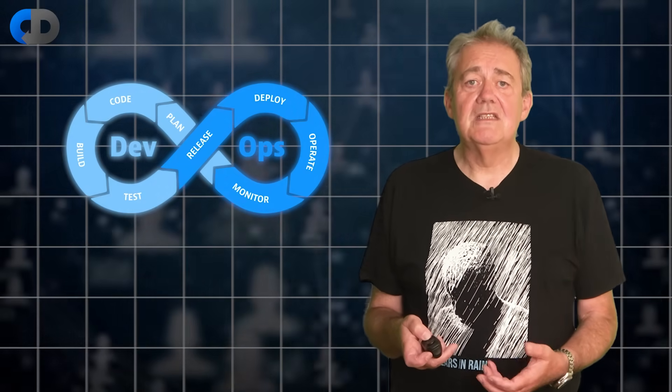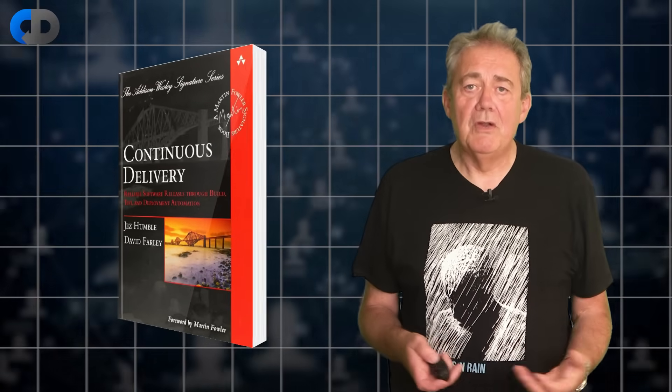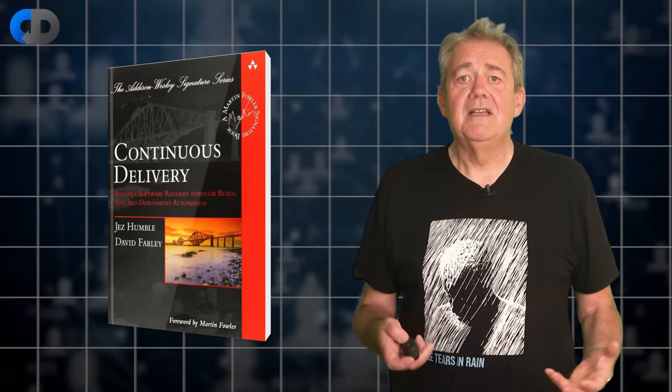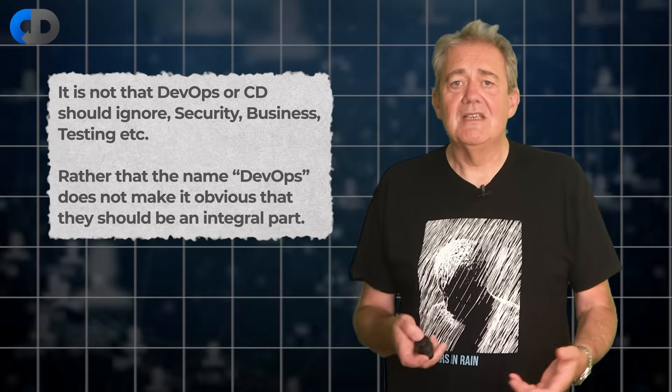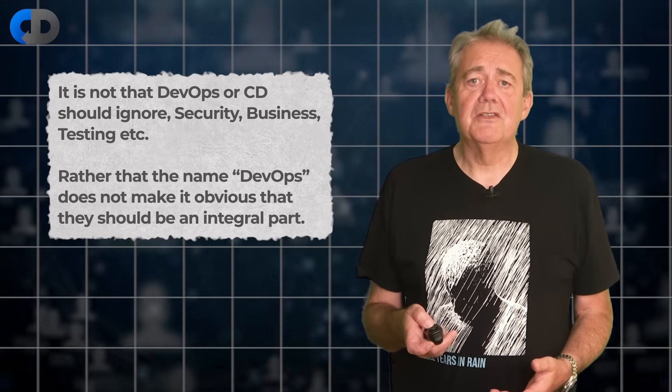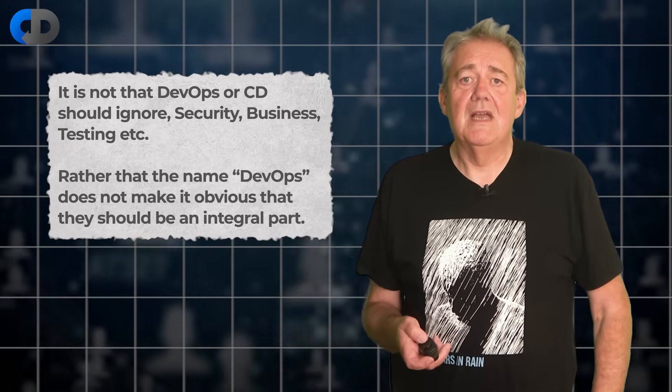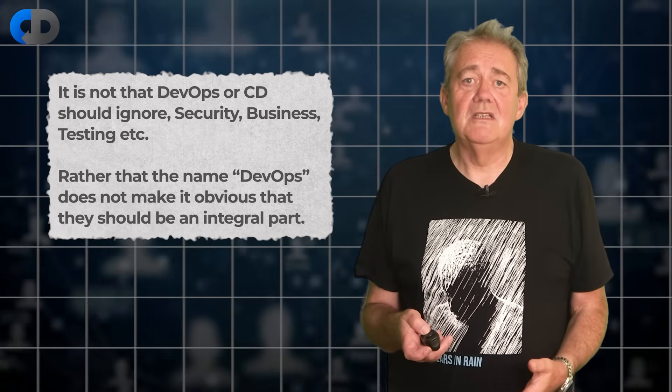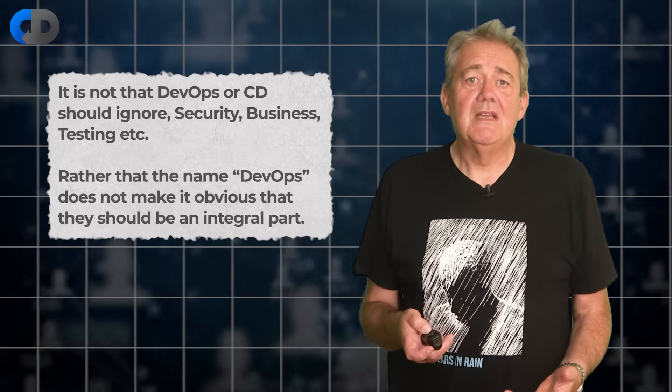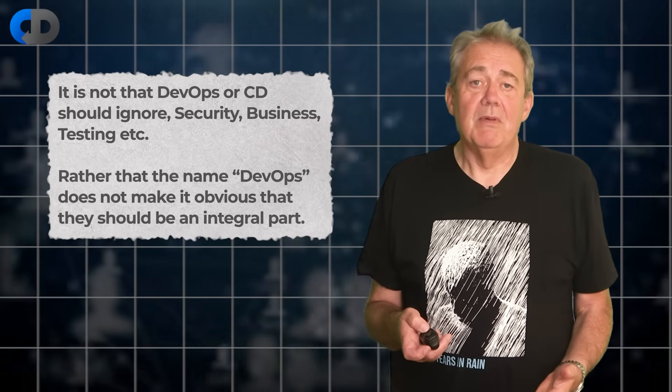DevOps is a broad discipline. When Jez Humble and I wrote the book Continuous Delivery I can guarantee you that we were well aware of the need to include security, testing, provenance and monitoring as well as lots of other things. Each of these and more are touched on in the Continuous Delivery book but we didn't make them clear enough and so that's probably our fault. But this is a very broad discipline. It has implications for every aspect and every role involved in the creation of software.